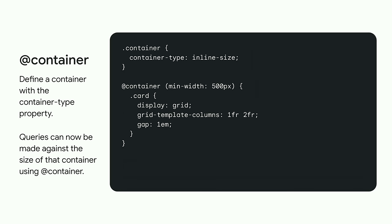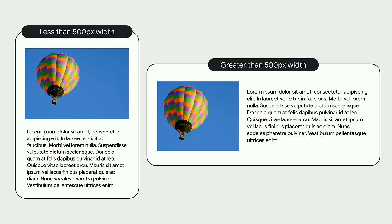You can then use @container in pretty much the same way you'd use @media, to test for a minimum or maximum size, and when those rules are met, you can apply some CSS. In this example, I'm turning a card into a two-column grid when the container is more than 500 pixels wide. I've got a simple card that displays using normal flow, and then it turns into a grid layout when there's enough space. You'll see more examples of container queries in the Web UI talk at Google I/O and in resources on web.dev.